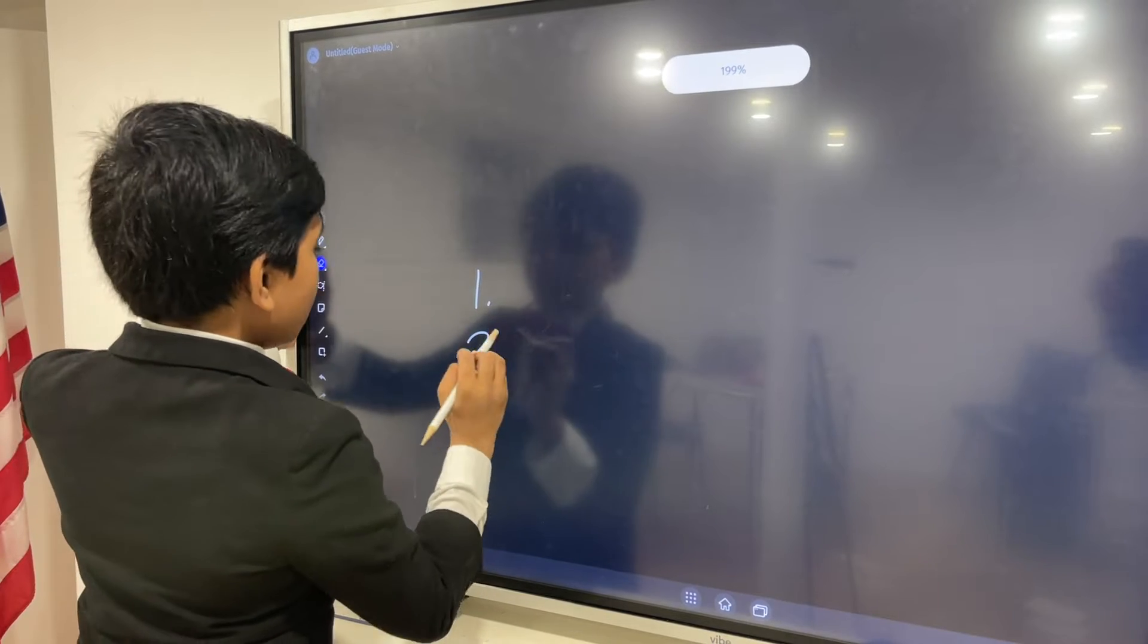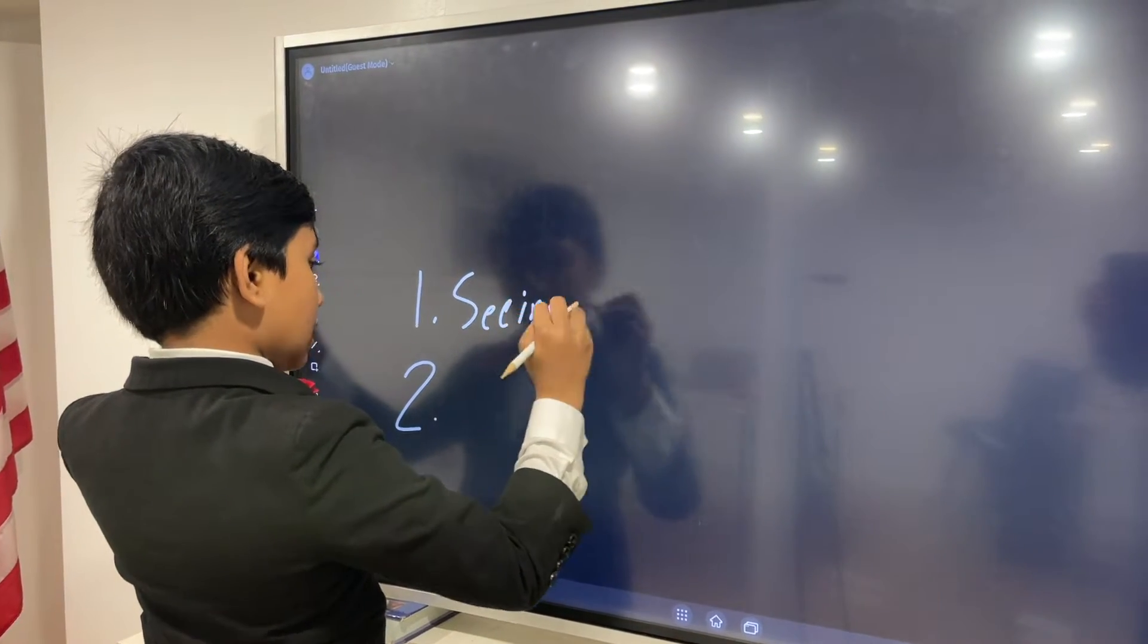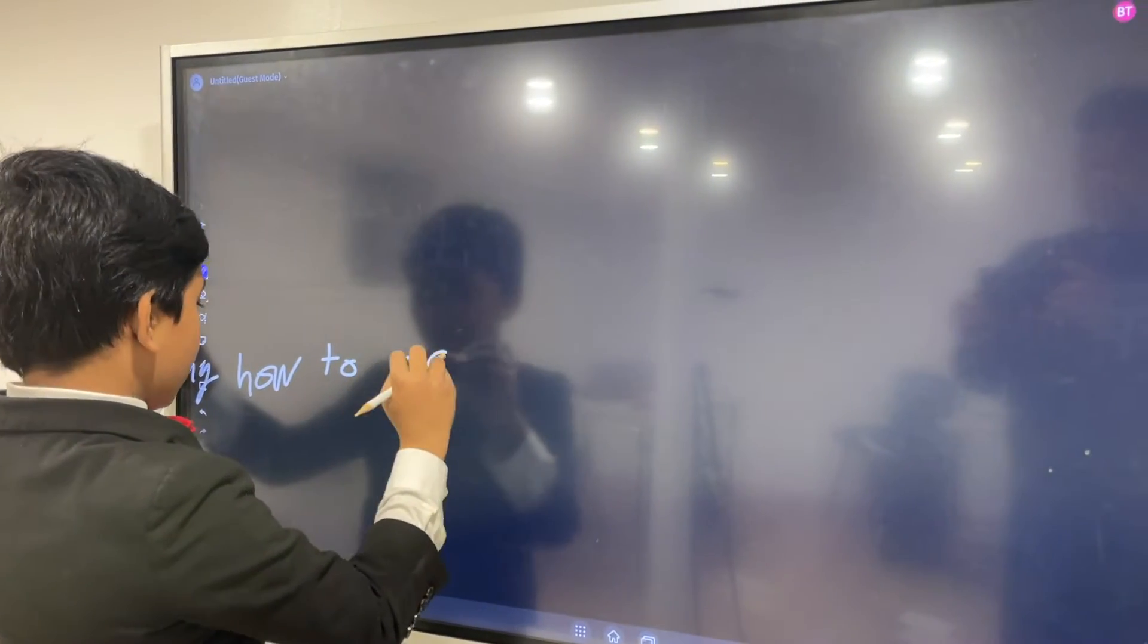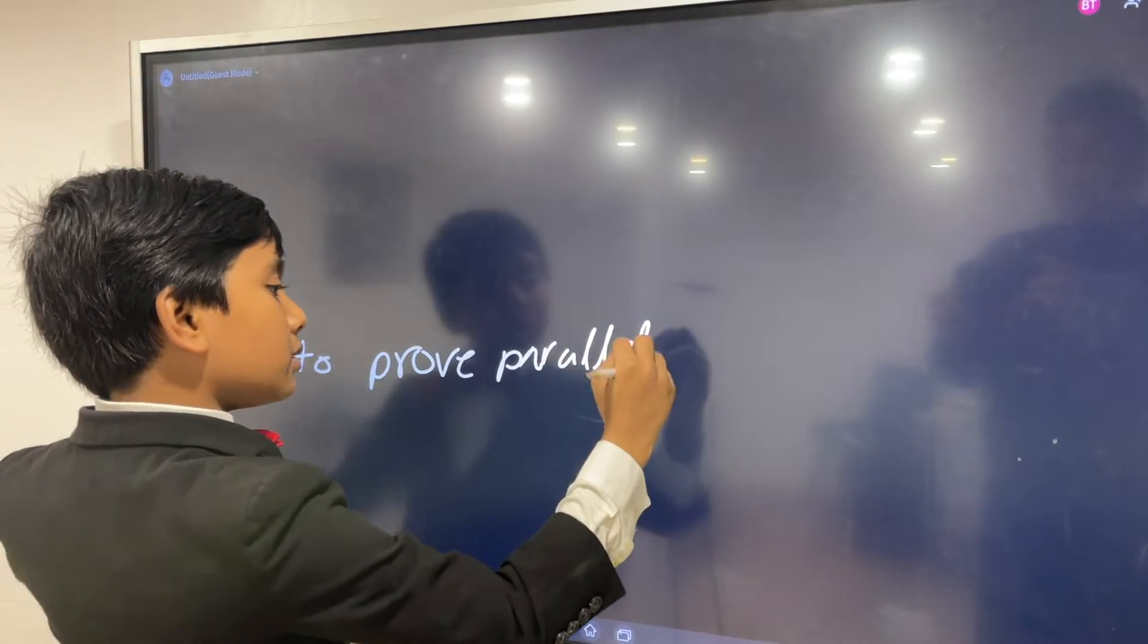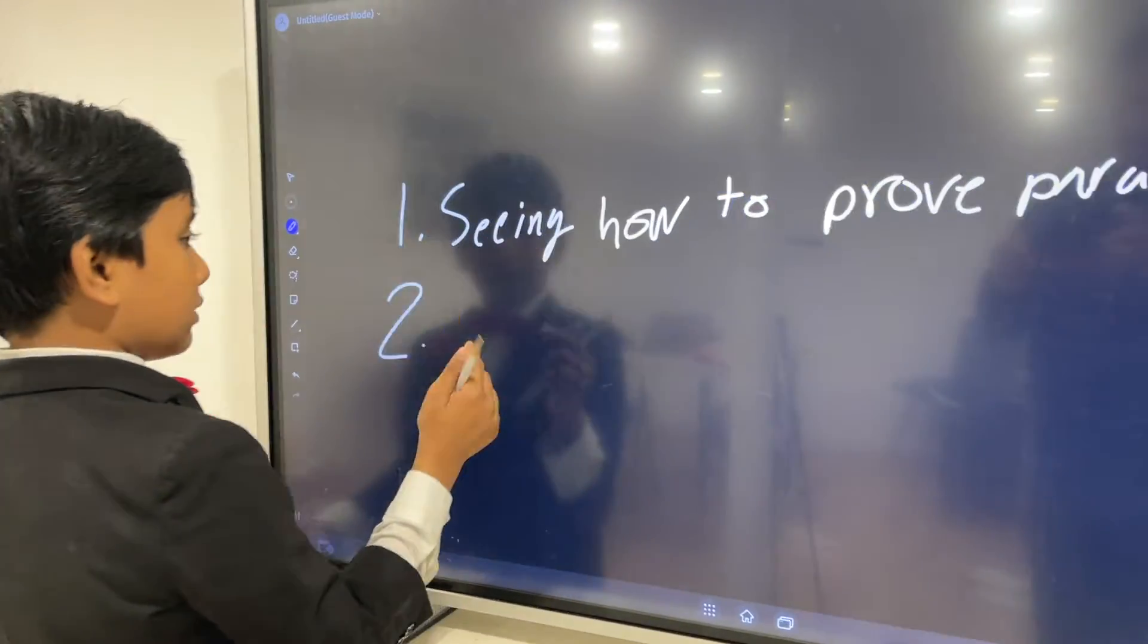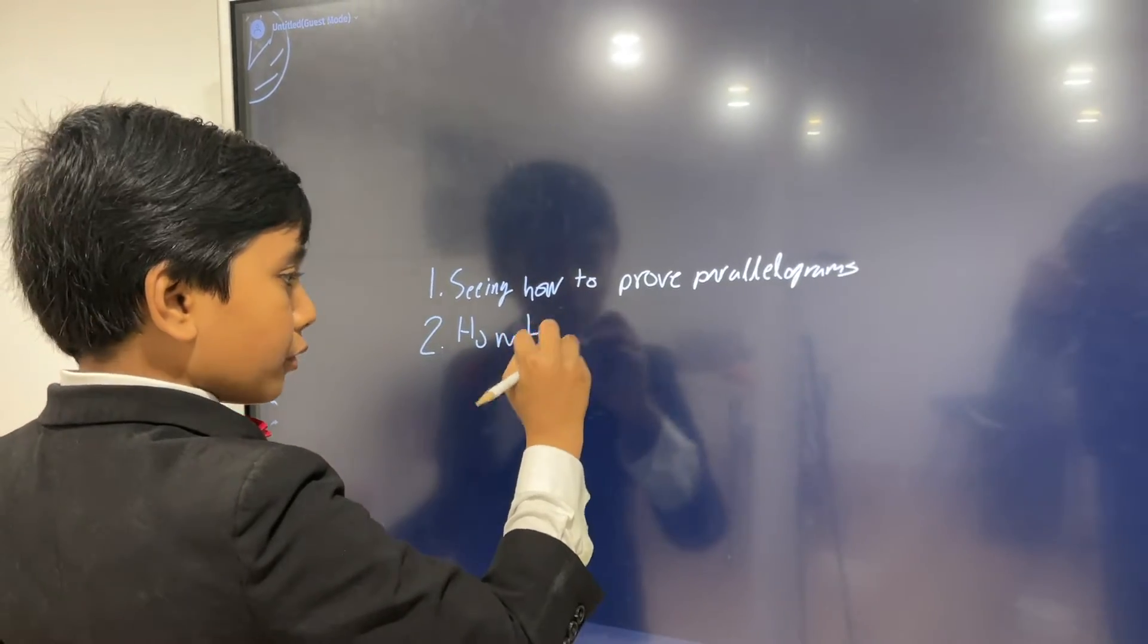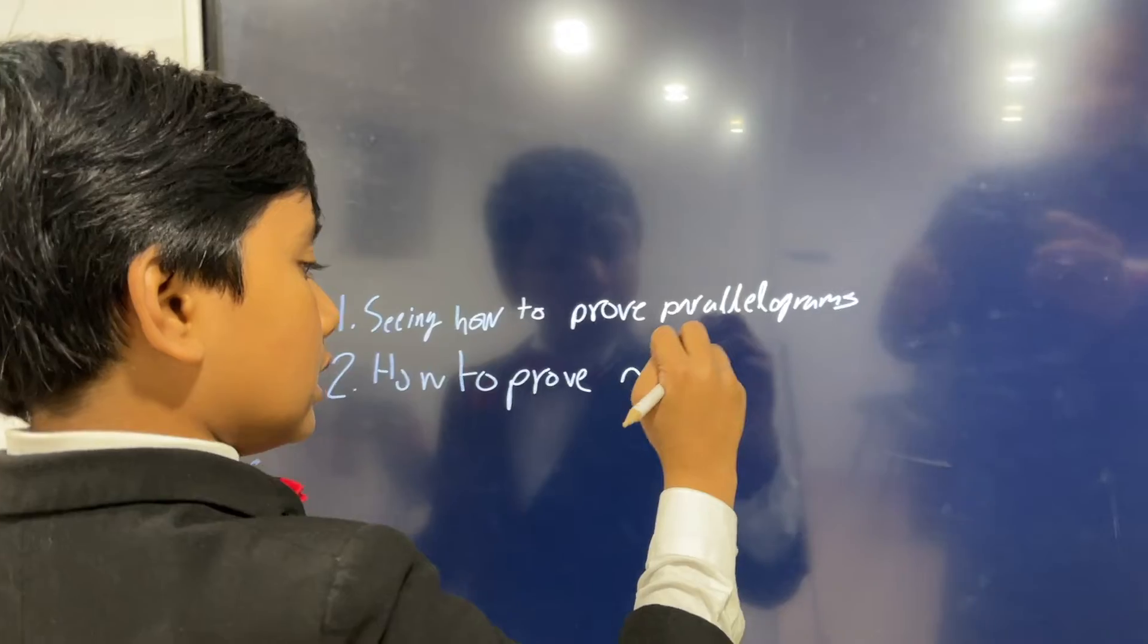First of all, we're going to be seeing how to prove parallelograms. What does that mean? Well, if we have some sort of polygon, we have to prove if it's a parallelogram. And then, how to prove things that are similar to parallelograms.